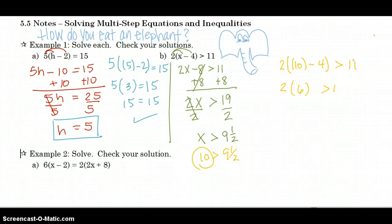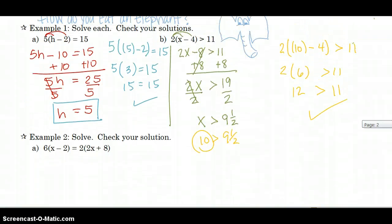2 times 6 is 12, and 12 is greater than 11, so it does check out. All right, so that's comparing an equation to an inequality.